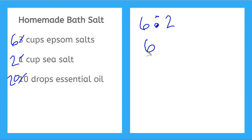Again, I'm going to put epsom salt in my numerator, the first thing that's given, and two, the sea salt, in the denominator.